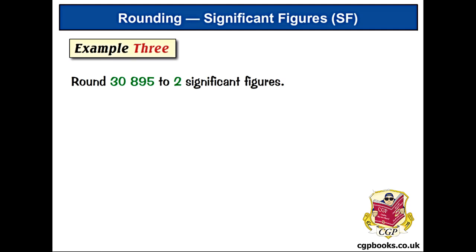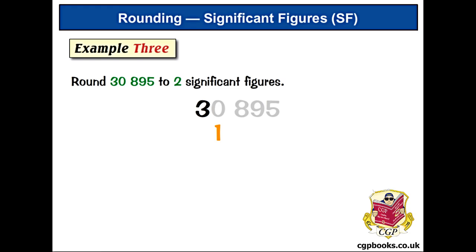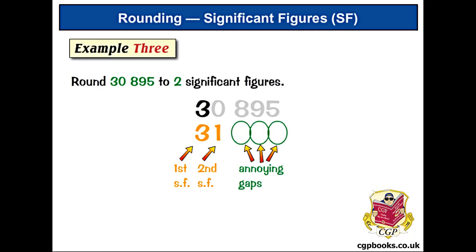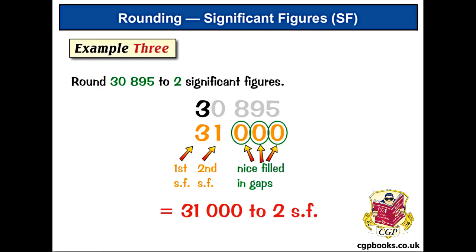Round 30,895 to two significant figures. The first significant figure is three and the second is zero, so zero is the last digit. The decider is eight, and that's five or more, so we round zero up to one. We put the three in to give us our two significant figures. But that's left us with three gaps before the decimal point, so we apply our extra rule and fill them in with zeros. That makes our answer 31,000.